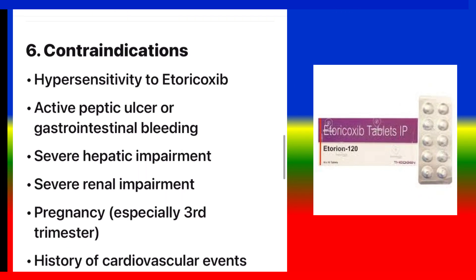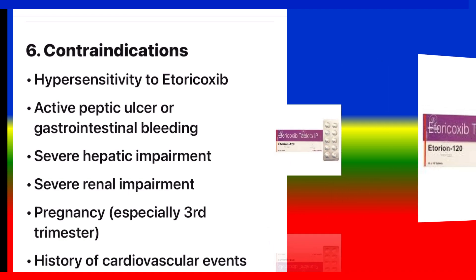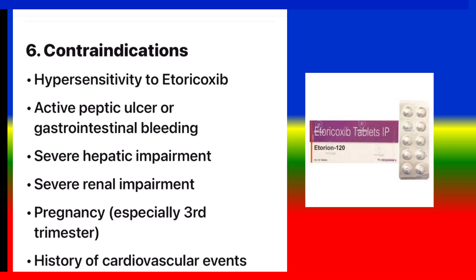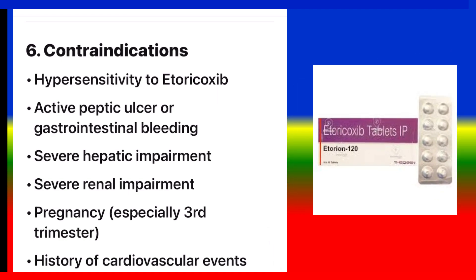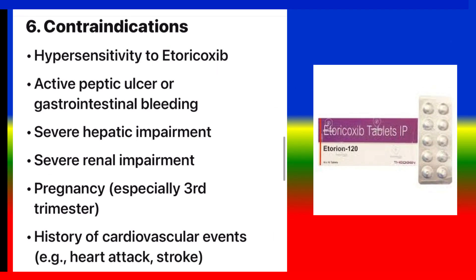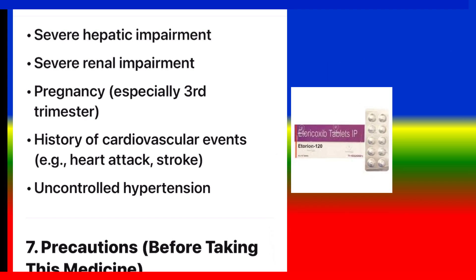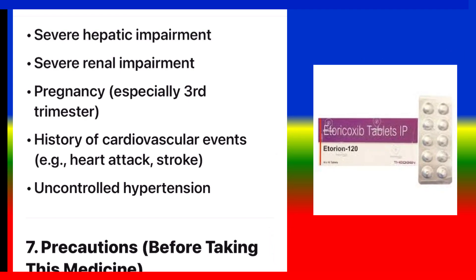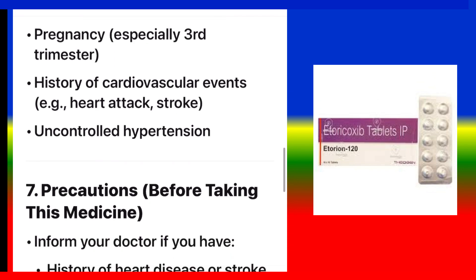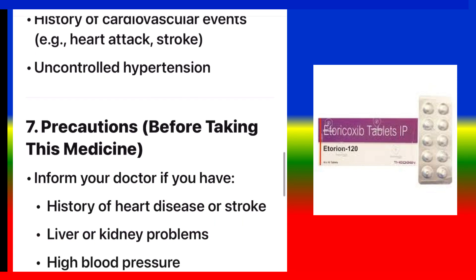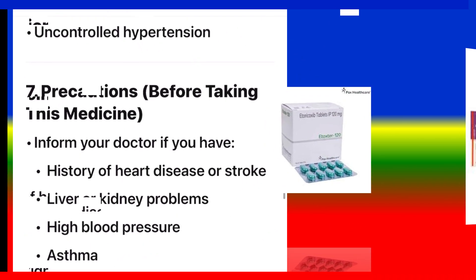Contraindications: hypersensitivity to etoricoxib, active peptic ulcer or gastrointestinal bleeding, severe hepatic impairment, severe renal impairment, pregnancy (especially third trimester), history of cardiovascular events (e.g. heart attack, stroke), and uncontrolled hypertension.